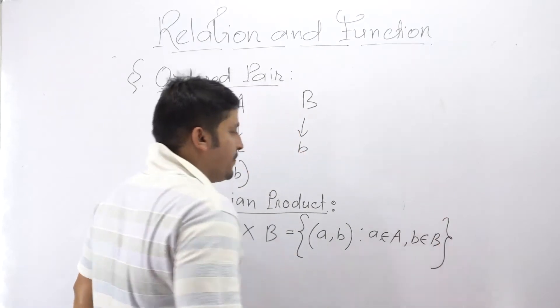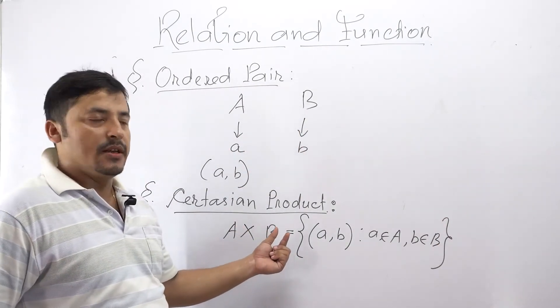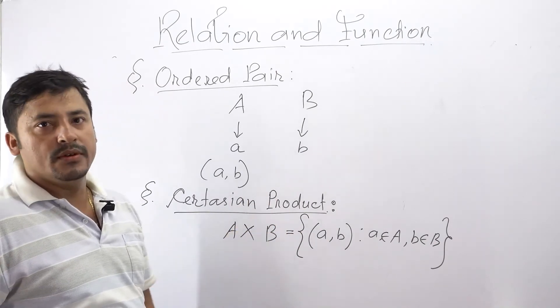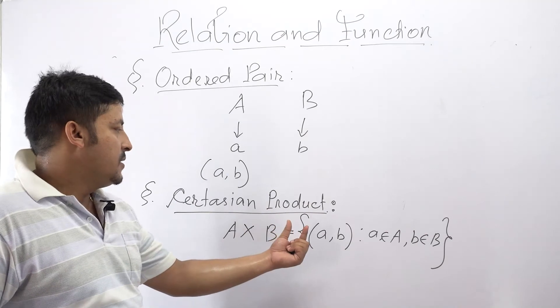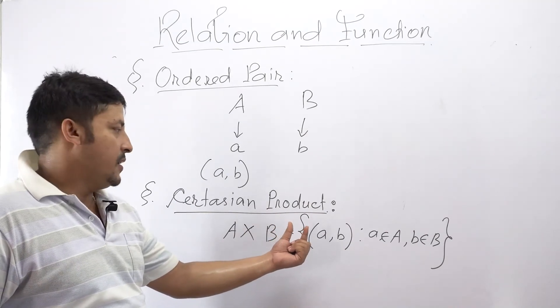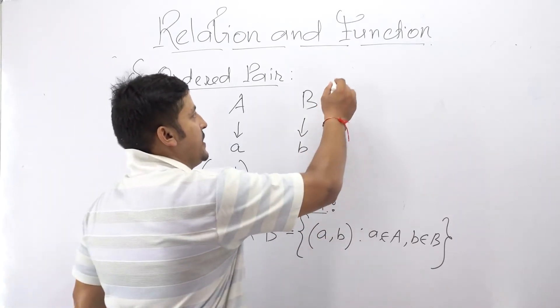That means the set of all the ordered pairs that A and B will constitute the Cartesian product of A and B. Here all the elements of A and B are behaving like elements but in the form of an ordered pair. If you consider for example.